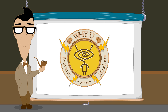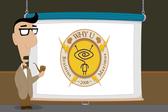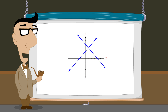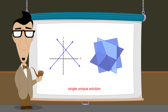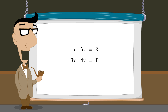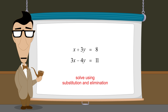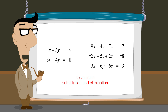Hello, I'm Professor Von Schmohawk and welcome to Why U. In the last lecture, we saw that just as systems of two linear equations in two variables have a single unique solution when the two lines in the system intersect at a single point, systems of three linear equations in three variables have a unique solution when the three planes intersect at a single point. Likewise, just as systems in two variables can be solved using substitution and elimination methods, these same techniques can be used to solve systems in three variables. There are also powerful methods involving the use of matrices that we will learn in future lectures.